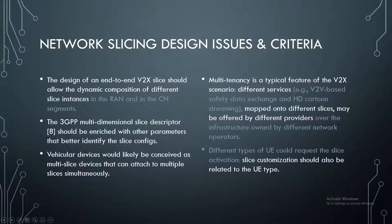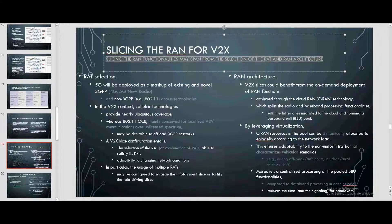For the network slicing design issues and criteria: the design of an end-to-end V2X slice should allow dynamic composition of different slice instances. The 3GPP multi-dimensional slice descriptor should be enriched with additional parameters that better identify the slice configurations. Vehicular devices would likely be conceived as multi-slice devices that can attach to multiple slices simultaneously. Multi-tenancy is a typical feature of the V2X scenario, where different services mapped onto different slices may be offered by different providers. Slice customization should also be related to the UE type.